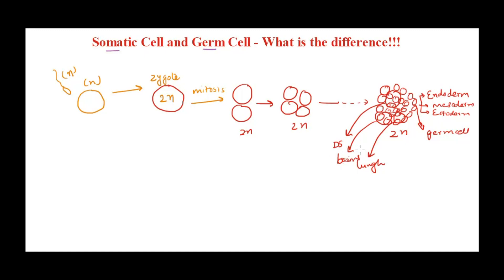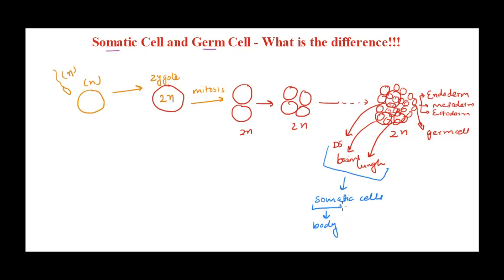All the cells that are produced and make up our body are called somatic cells. The term 'soma' means body, so all the body cells are called somatic cells — except for the germ cell line.